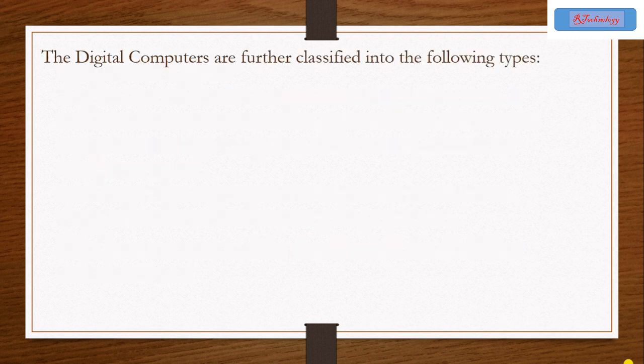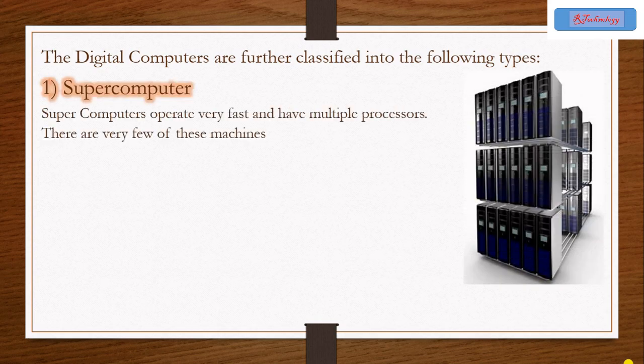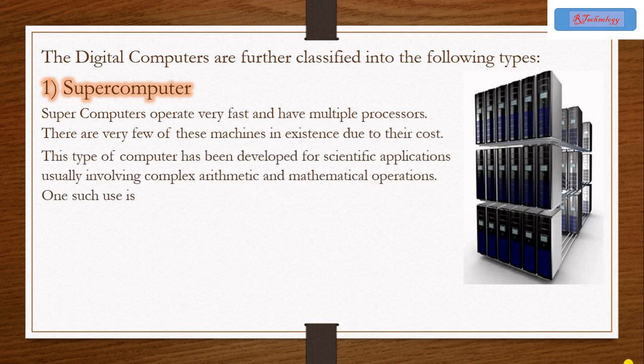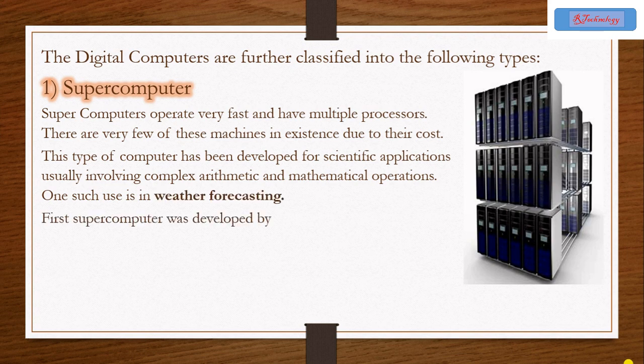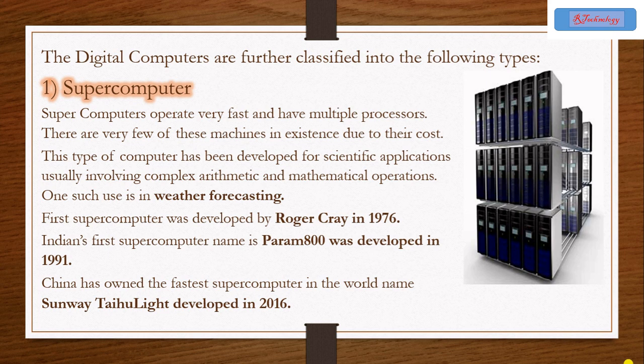As we have seen in the diagram, the digital computer further classified into four types. The first is supercomputer. A supercomputer operates very fast and has multiple processors. There are very few of these machines in existence due to their cost. This type of computer has been developed for scientific applications usually involving complex arithmetic and mathematical operations.